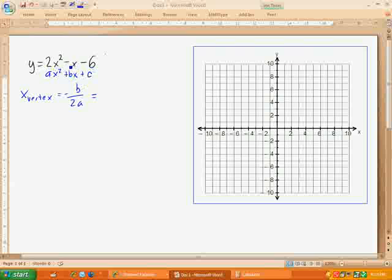So, in this case, b is going to be negative 1. So, negative negative 1 is positive 1, divided by 2 times a, which is 2. And you'll see that my x vertex, x of the vertex, is going to be 1 fourth, or 0.25.